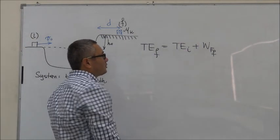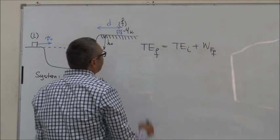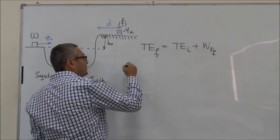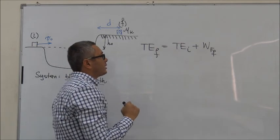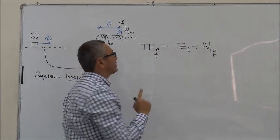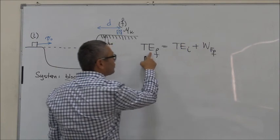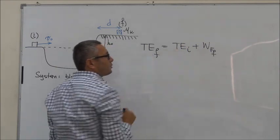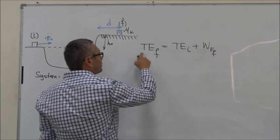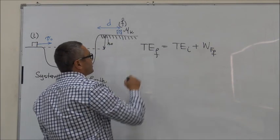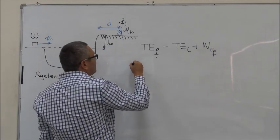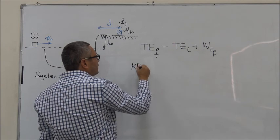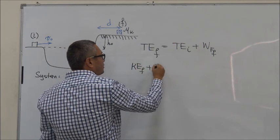So what is our total energy final? The total energy final consists, well, when we say total energy, here we mean total mechanical energy. Total mechanical energy final is equal to kinetic energy final plus potential energy final.